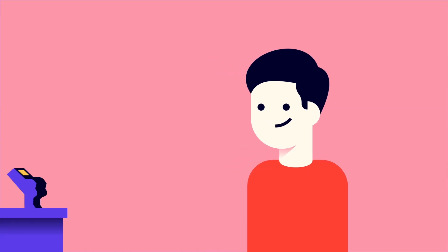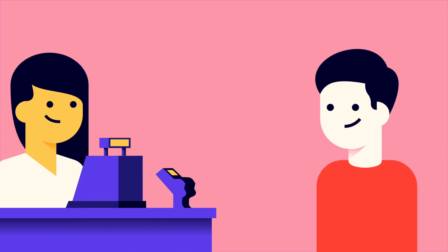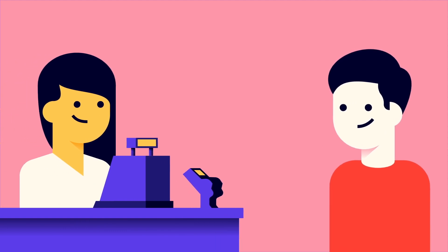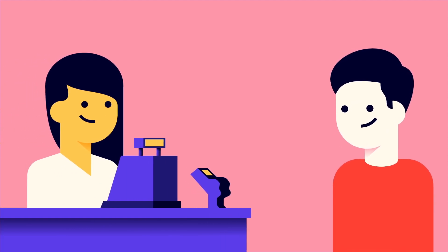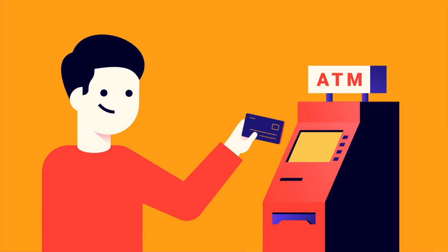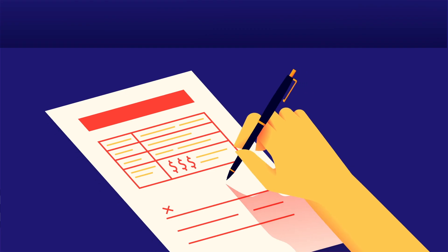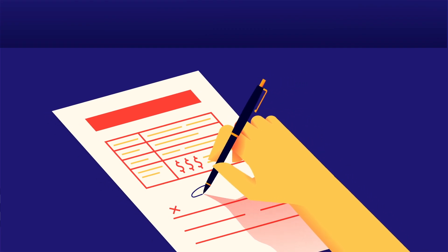Credit card companies sometimes offer different types of APR, depending on how you use your card. These include Purchase APR, Cash Advance APR, Penalty APR, and Introductory APR.